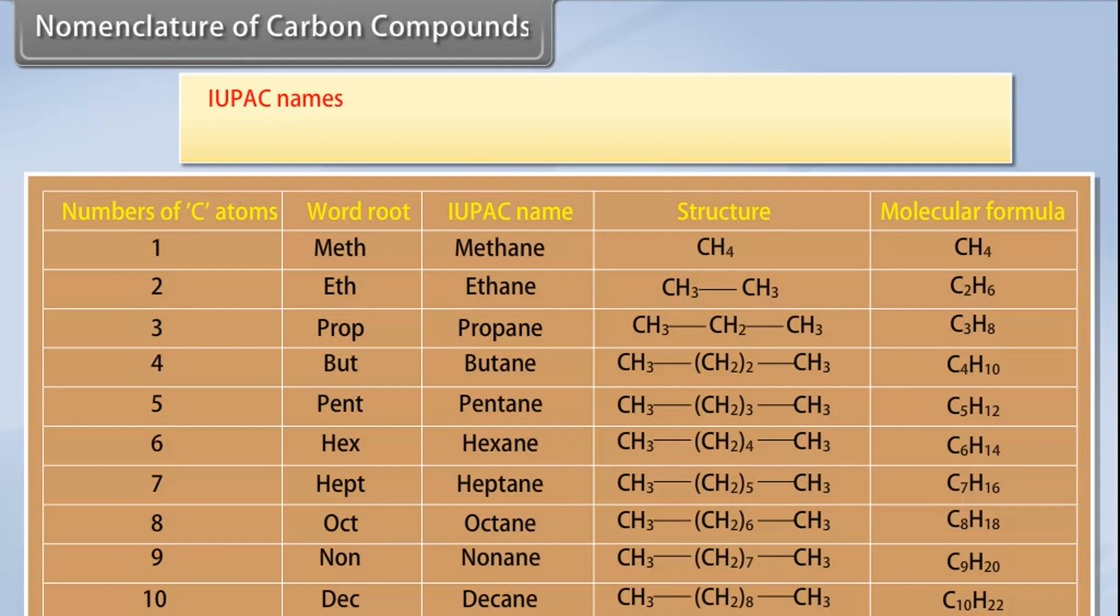IUPAC names: Carbon compounds now need to be named in a more systematic way. A committee called the International Union for Pure and Applied Chemistry (IUPAC) put forward a system of giving scientific names to carbon-based compounds. These names are followed all over the world and are called IUPAC names.